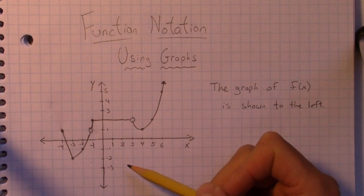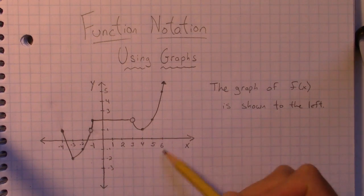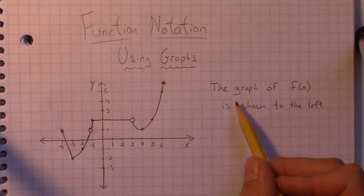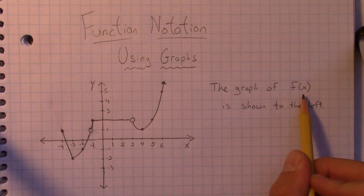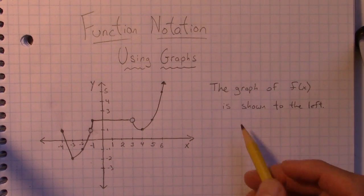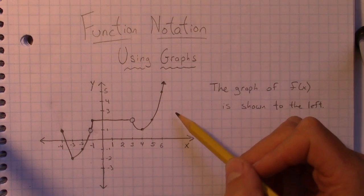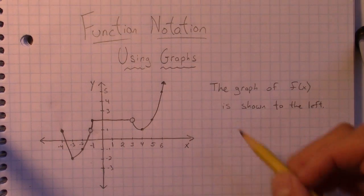So what we're looking at is here a graph, and it's kind of a complicated looking graph depending on whether or not you've seen piecewise functions. So the graph is of f(x). It's shown to the left. And it doesn't actually matter if it's super complicated like this or just a straight line or maybe a parabola.